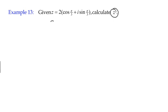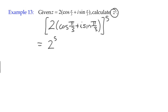So we could rewrite it as two times cos π/3 plus i sine π/3 raised to the fifth power. Which means that we take the modulus and we raise that to the fifth power, and then we're going to take our argument and we're going to multiply it by five.